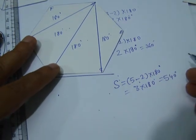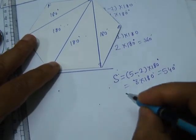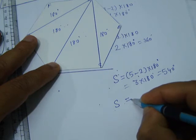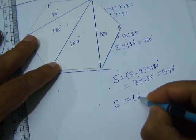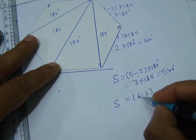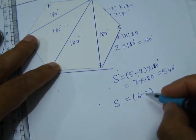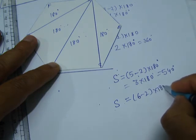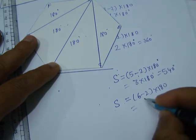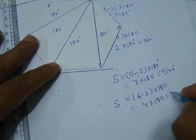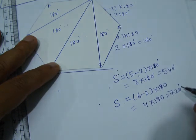We can write this as (6 - 2) × 180 degrees, where 6 stands for the number of sides in a hexagon. Since 6 minus 2 is 4, we get 4 × 180 = 720 degrees.